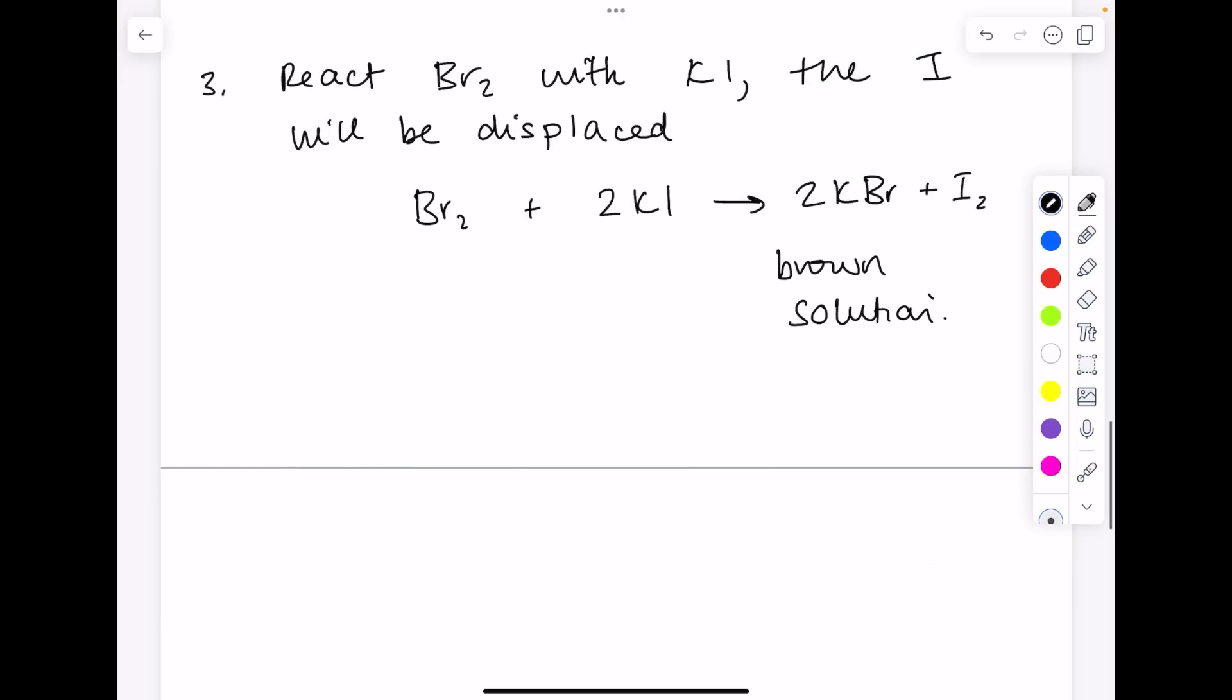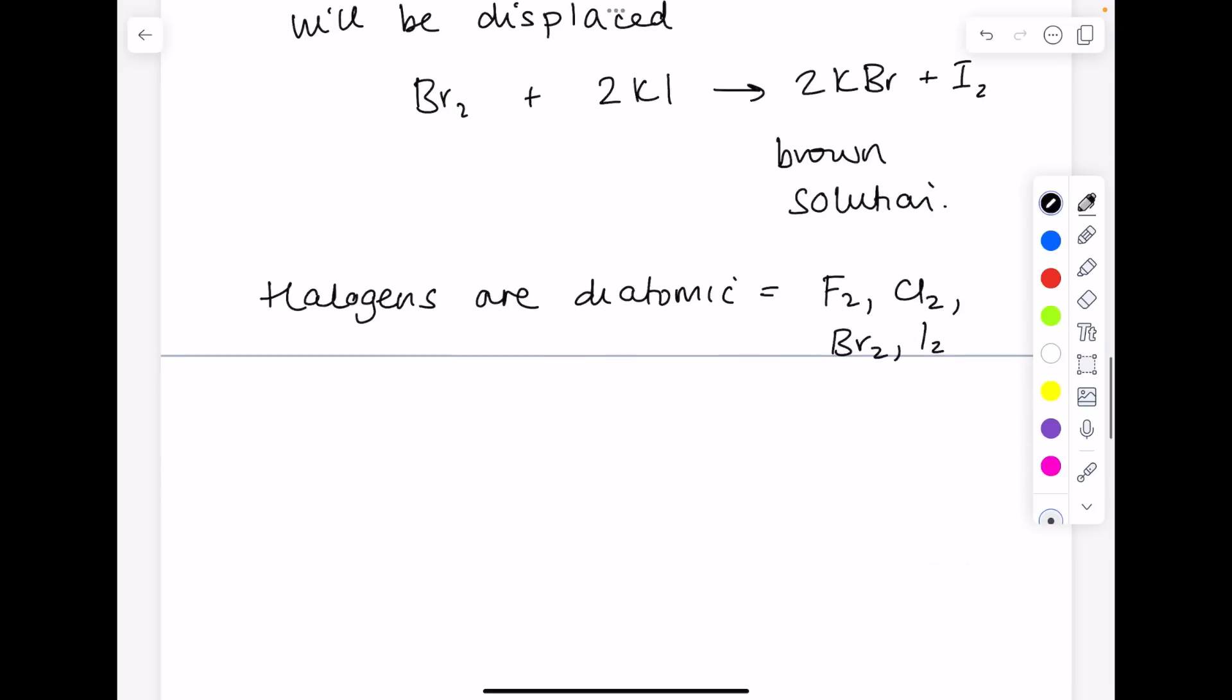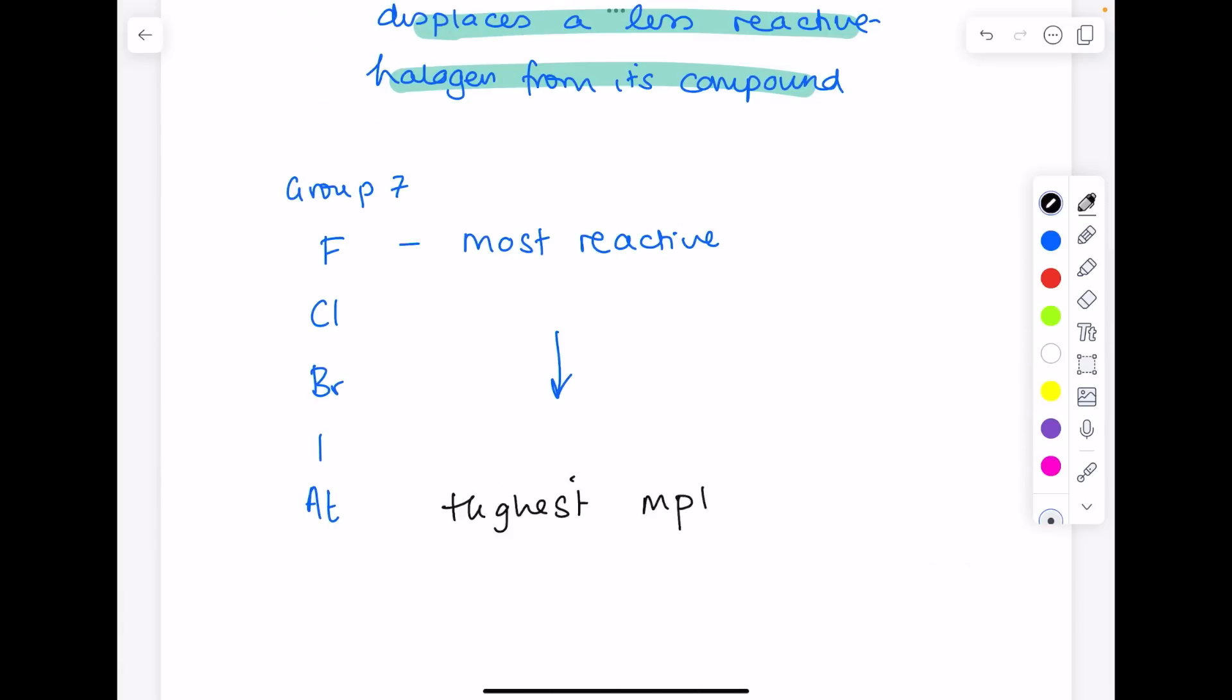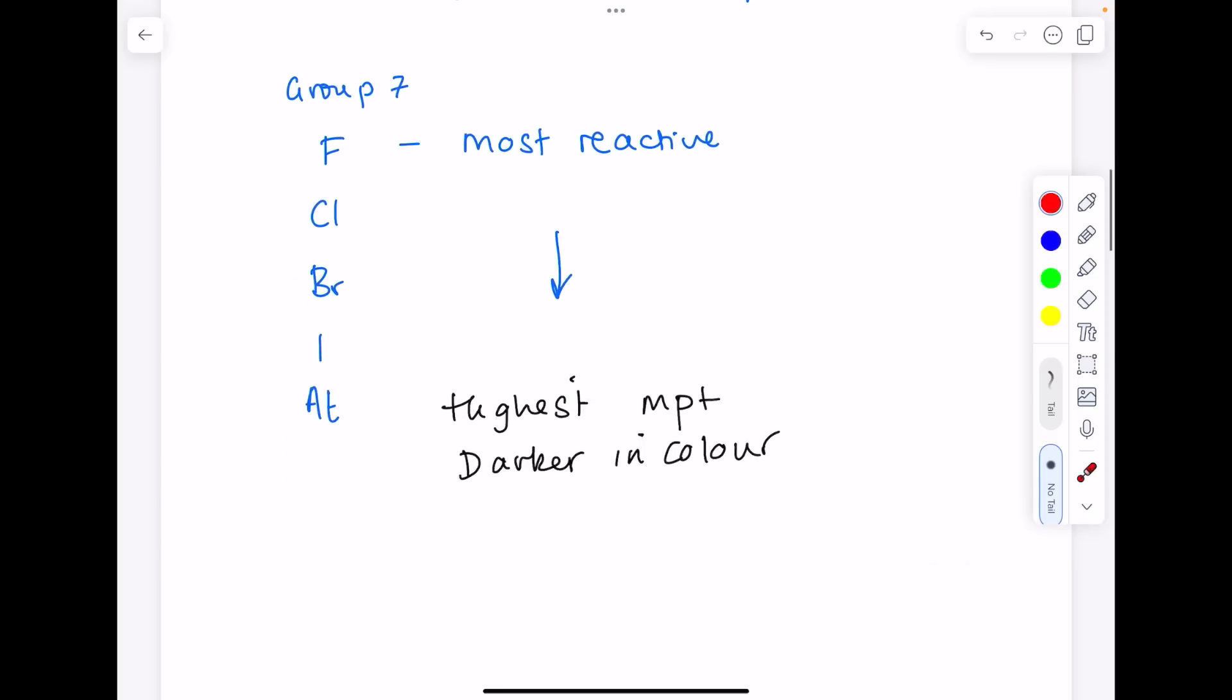All halogens are diatomic, which means they consist of two atoms such as fluorine, chlorine, bromine, iodine. Their melting points increase down the group and they get darker in color down the group. We'll have a yellow gas, green gas, orange liquid, grey solid, black solid, and iodine undergoes sublimation, which means it turns directly from a solid to a gas.